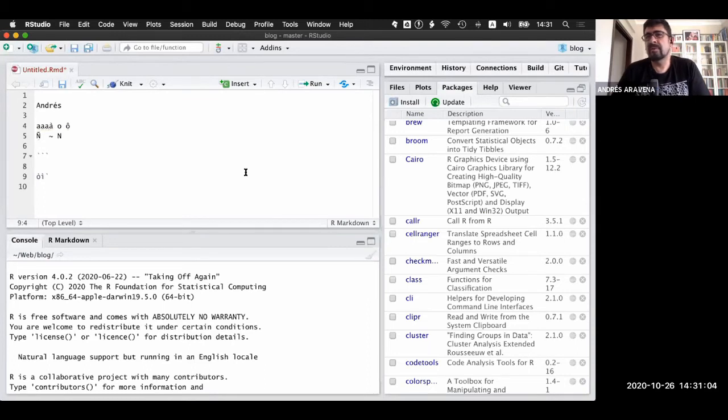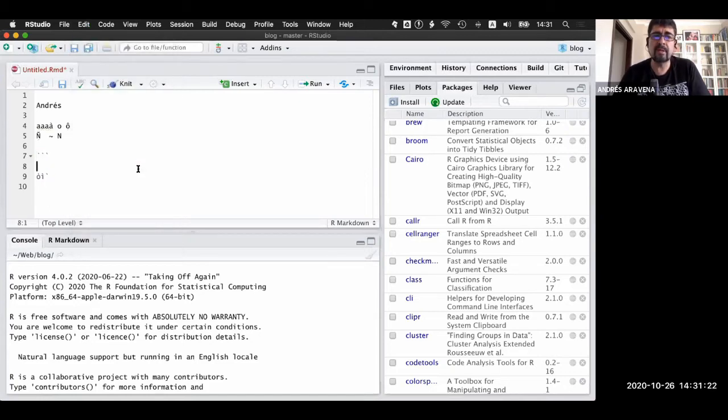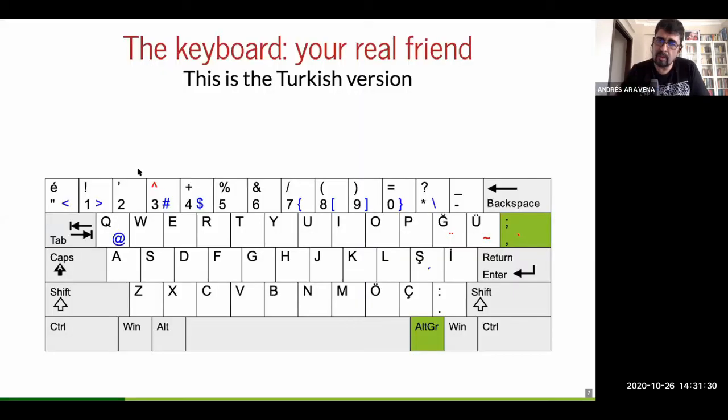Because if I only press backtick, nothing happens because it's expecting another letter. For example, an O, backtick E. They are expecting another letter. If I want to write only backtick, I have to press backtick spacebar. Now this is, to be honest, very annoying. And that is one of the reasons that I don't use the Spanish keyboard or the Turkish keyboard. In the American keyboard, that doesn't happen. But what I do is I write three ticks one time and then I copy and paste every time.